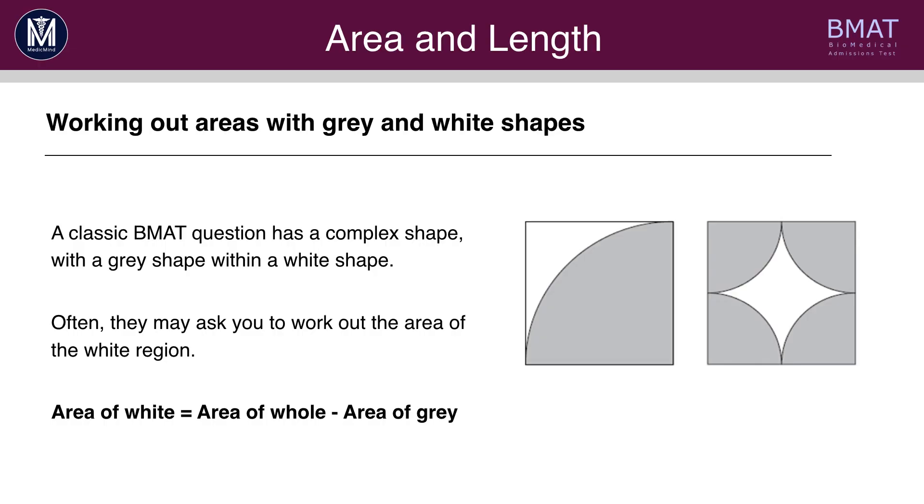Sometimes, you'll get questions where they have grey and white shapes, and you'll have to work out the areas of different sections. A classic BMAT question will have a complex shape, with a grey shape within a white shape, as shown on the right. And often, they will ask you to work out the area of the white region. In this scenario, the area of the white region will be equal to the area of the whole square minus the area of the grey.